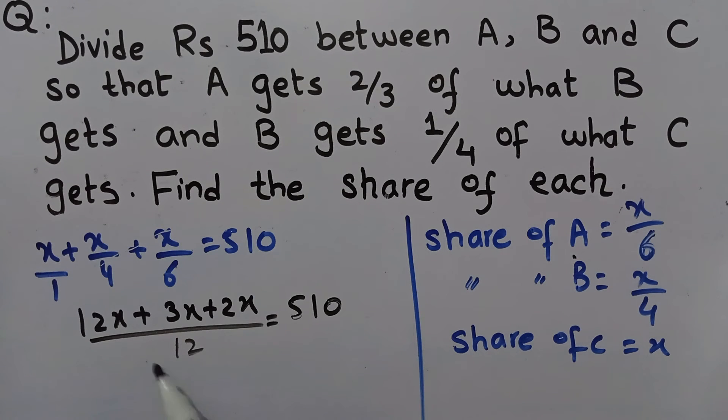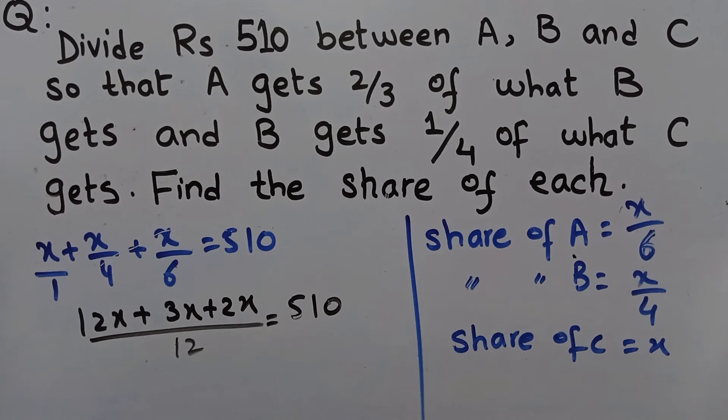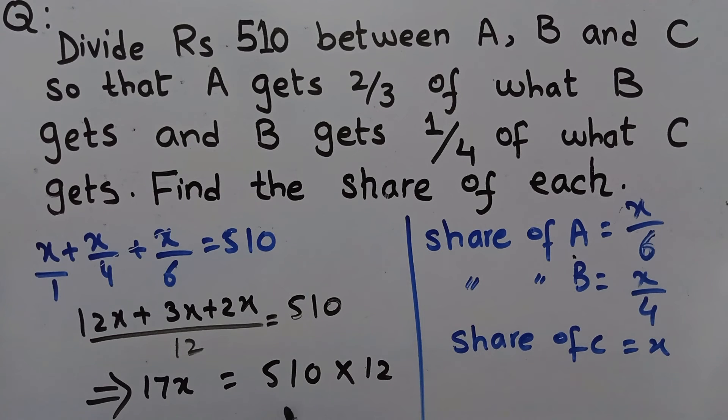Now we add them all: 12X plus 3X plus 2X equals 17X. We divide this equation by 17 to solve for X. This gives us Rs 360.